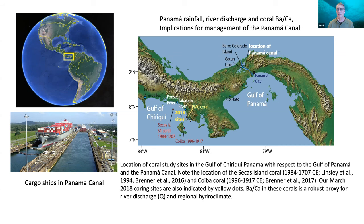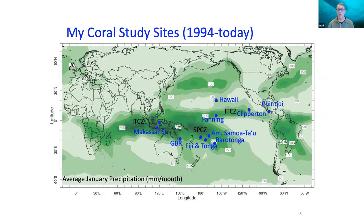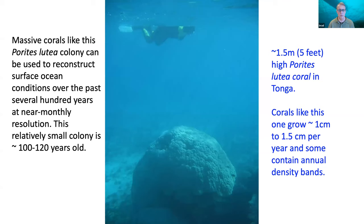I started working in Panama as a postdoc at Rice University and have been to many other coral sites shown as blue dots on this map. Now I'm back working on Panama with a recently funded NSF project. Today I want to give an overview of coral work, how we use corals to reconstruct climate, and then talk about the two tracers — how we measure them and how we use them. It's a work in progress with some draft conclusions.